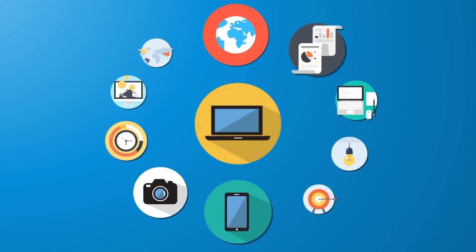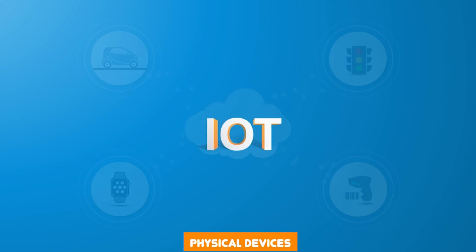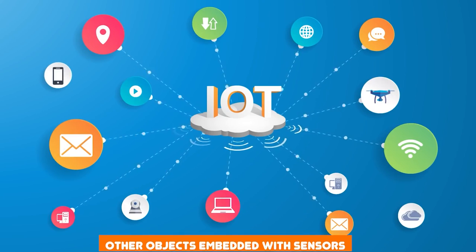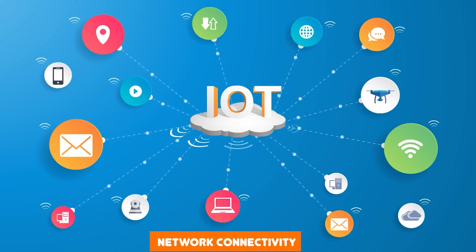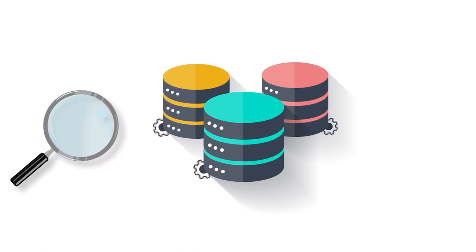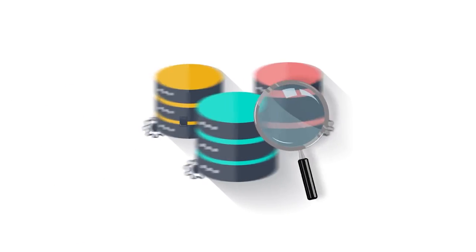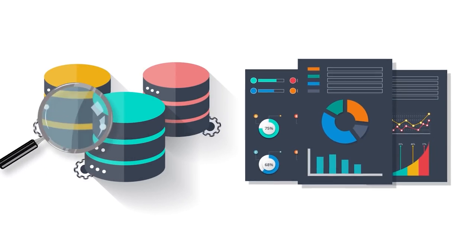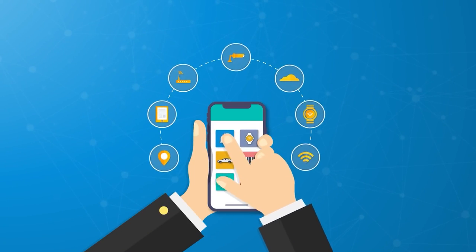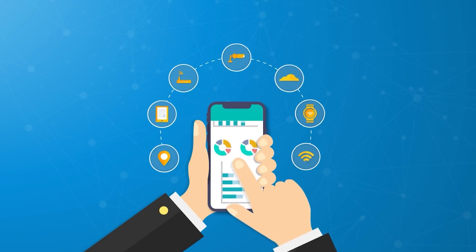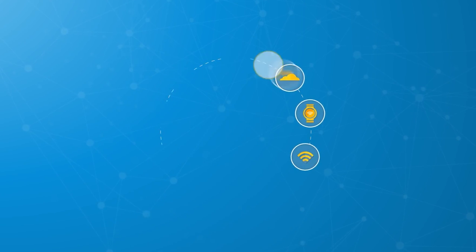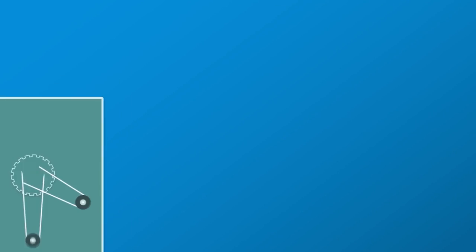The Internet of Things refers to the interconnection of physical devices, vehicles, buildings, and other objects embedded with sensors, software, and network connectivity. These devices can collect and exchange data, automate tasks, and interact with their environment without human intervention. IOT has become an integral part of our lives, from home automation systems like smart thermostats and security cameras to healthcare devices that monitor our health and well-being.